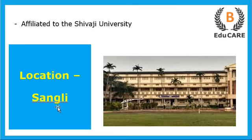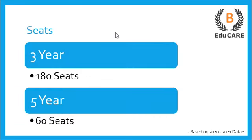This college is located in Sangli and it is affiliated to Shivaji University. Talking about the number of seats, for the three-year LLB program this college offers 180 seats, and for the five-year integrated law program this college offers 60 seats.